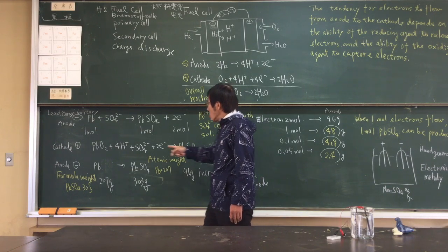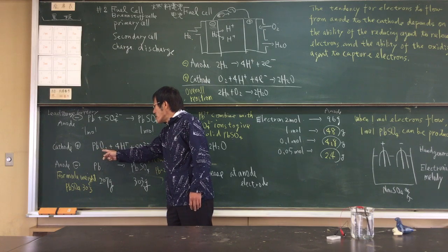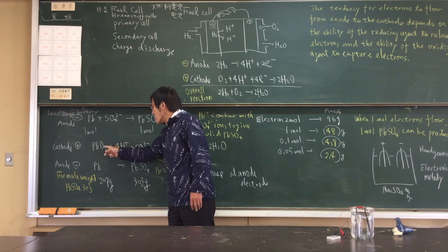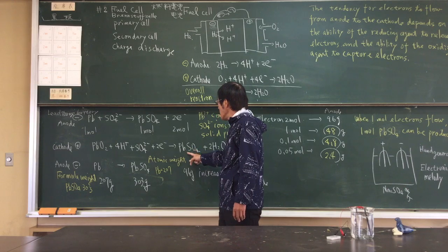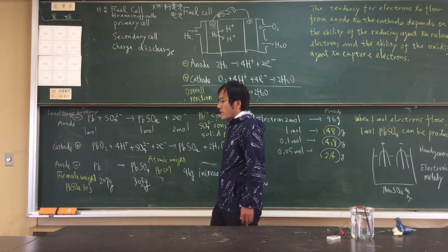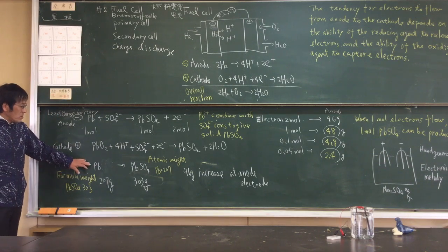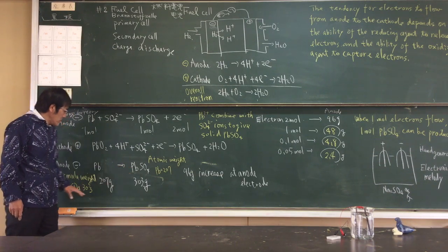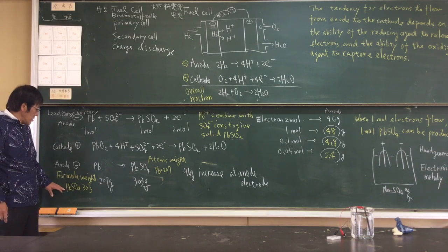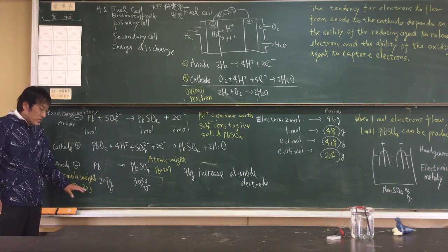One molar lead sulfate is generated, changing into lead sulfate at the anode. Lead changes into lead sulfate. Formula weight lead sulfate: 303.